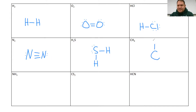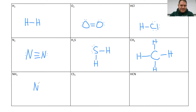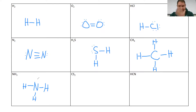For methane CH₄: carbon in the center with four hydrogen atoms each single-bonded around it. For ammonia NH₃: nitrogen in the center with three hydrogens single-bonded around it — one bond up, one on each side — and a lone pair on the nitrogen.